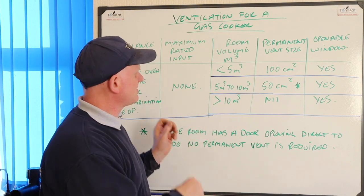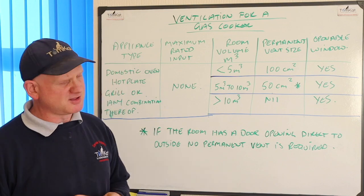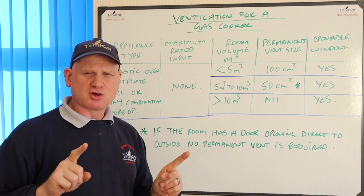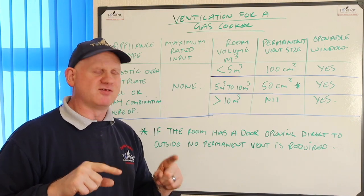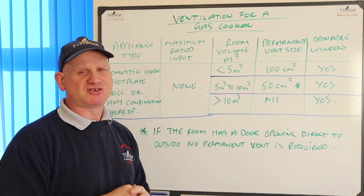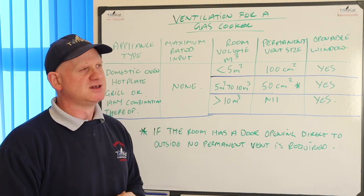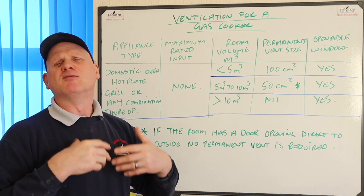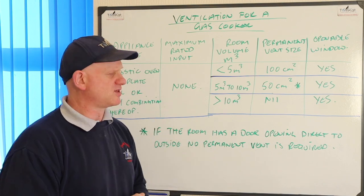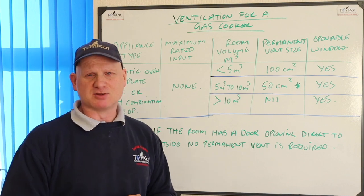That's the ventilation requirements for cookers. Range cookers are slightly different — you should always refer to the manufacturer's instructions for range cookers and follow those for your ventilation requirements.